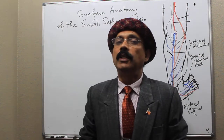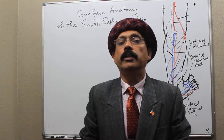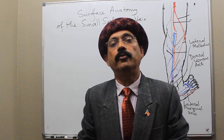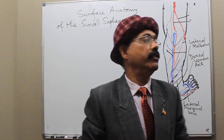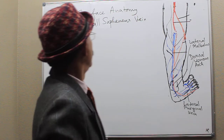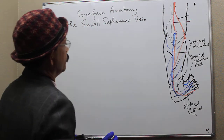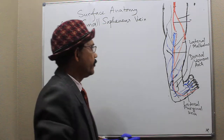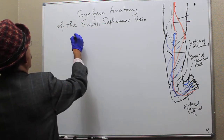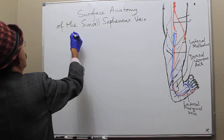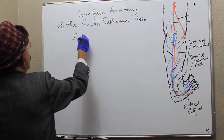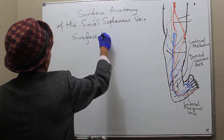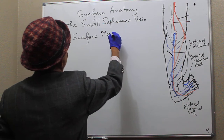Hello, now we learn the surface anatomy of the small saphenous vein. Surface anatomy — we must know the surface markings. What are the surface markings? Surface marking points.